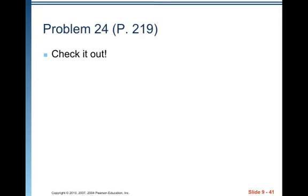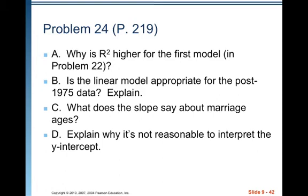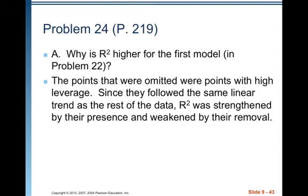All right. Let's look at problem 24. So again, stop for just a second. Go check it out. You've got more on the ages of the couples. Okay. Welcome back. Why is r squared higher for the first model, the one in problem 22? Is the linear model appropriate for the post-1975 data? Explain what does the slope say about marriage ages and explain why it's not reasonable to interpret the y-intercept.